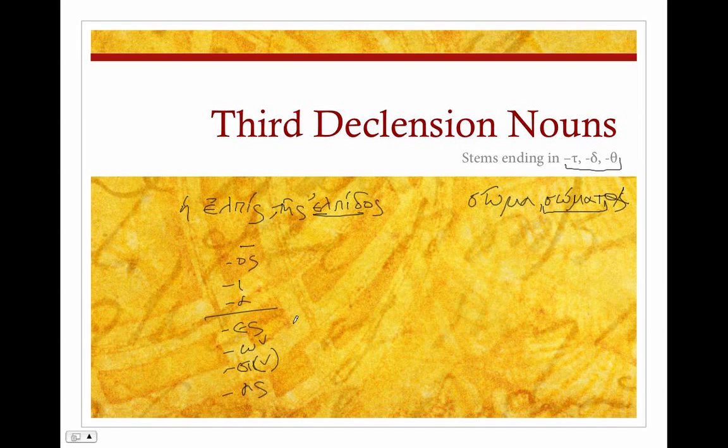Remember, if you remember back to somatos, the only trick here, other than finding what the stem is, is that the dative plural sigma is going to eat the tau, delta, or theta. So our dative plural for soma was somasin, where the sigma ate the tau.